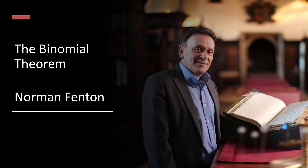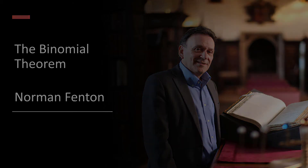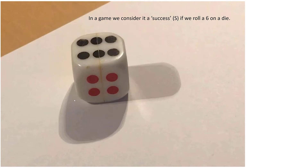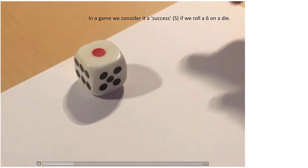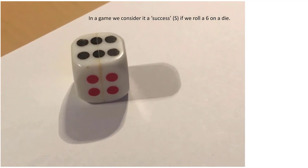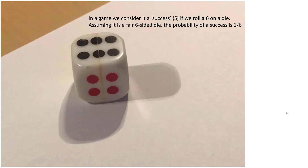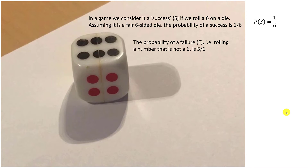In this short video I'm going to explain the binomial theorem from scratch. Imagine that we're playing a game with a die and that we consider it a success if we roll a six. Then assuming it's a fair six-sided die, the probability of success on any single roll is one over six. The probability of a failure — in other words throwing anything other than a six — is going to be five over six.